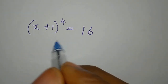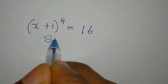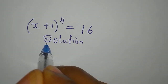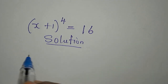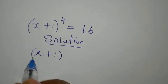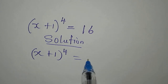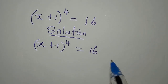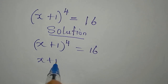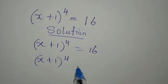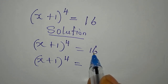Hello everyone, let's provide the solution to this very quickly. We have x plus 1 to the power of 4 equals 16. So what should we do? x plus 1 to the power of 4 would be equal to 16.